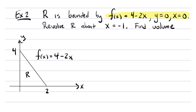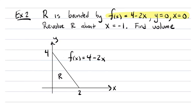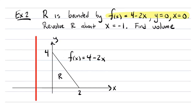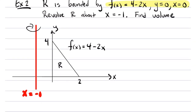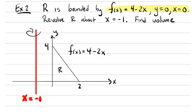I'm going to rotate that region around the line x equals minus one. Let me draw it in a distinct color — maybe x equals minus one is right there. So that's the line we want to rotate this thing around. It's not the y-axis — that's the point. I'd still like to find the volume, but we're rotating this region around the line x equals minus one.